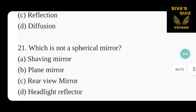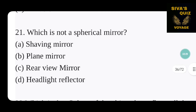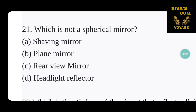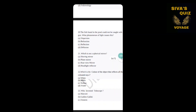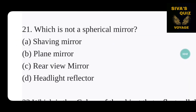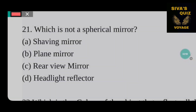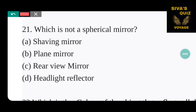Next question: which is not a spherical mirror? Option A is shaving mirror, B is plain mirror, C is rear view mirror, and D is headlight reflector. Spherical mirrors are concave and convex mirrors. Rear view mirror is a convex mirror, headlight reflector is a concave mirror, and shaving mirror is a concave mirror. So option B — plain mirror — is the right answer, as it is not a spherical mirror.